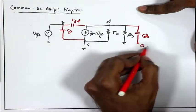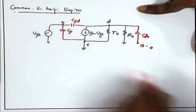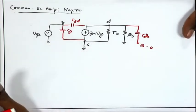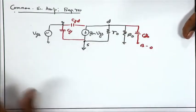Since body B is grounded and source S is also grounded, CSB is not considered — only CDB is relevant.